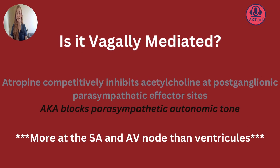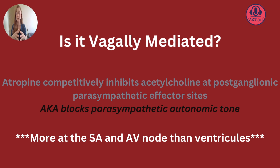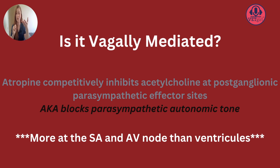What an Atropine Response Test is going to tell you is if the bradycardia is being vagally mediated — how much is the autonomic nervous system contributing to the bradycardia? Atropine is going to block or decrease parasympathetic tone of the autonomic nervous system, most specifically at the level of the SA node and the AV node. It's going to increase the firing of the SA node pacemaker cells, and it's going to increase the conduction of electrical current through the AV node.